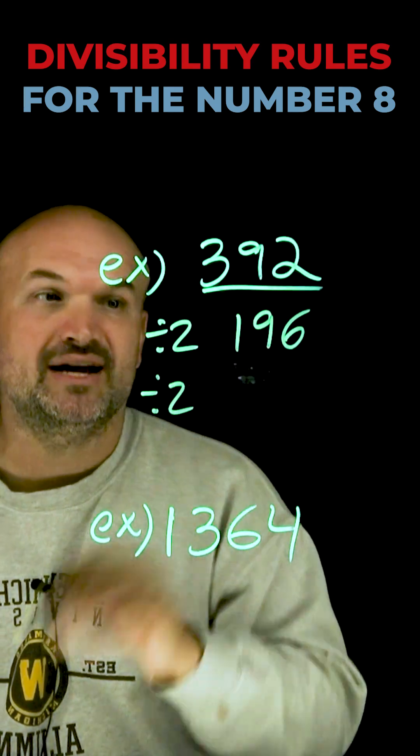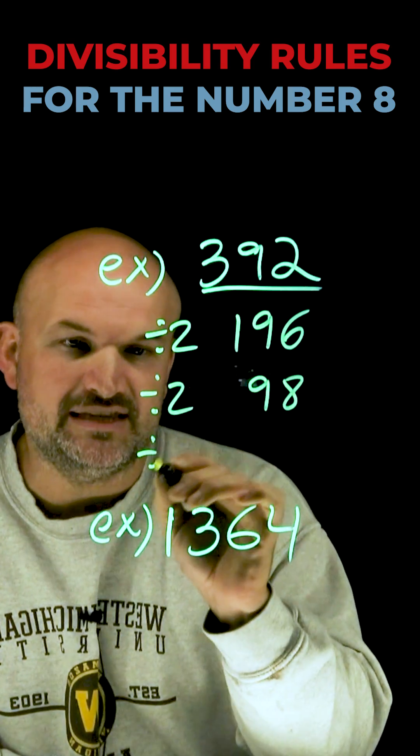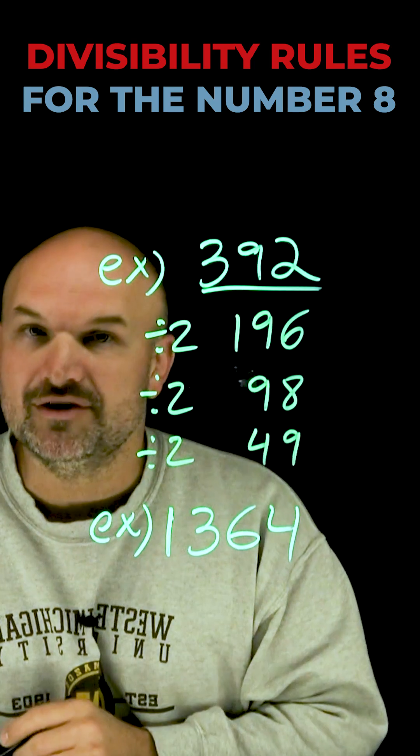Now, if I take that number and divide that by 2 again, I'm now going to get a 98. Then, if I divide that by 2 one more time, I'm now going to get a 49.